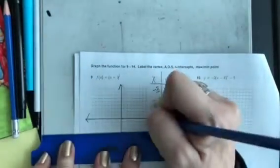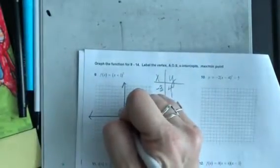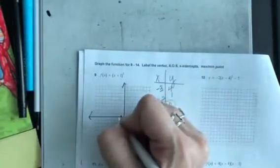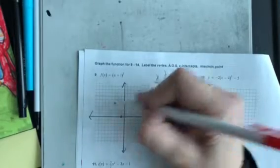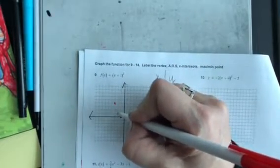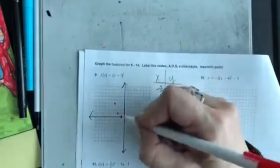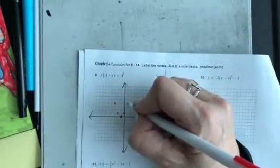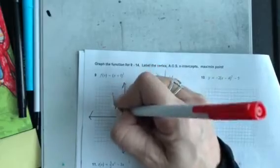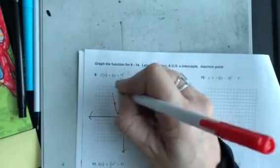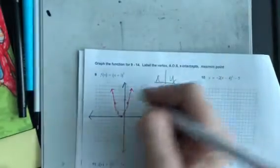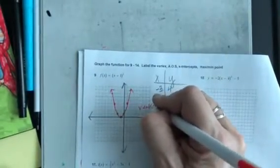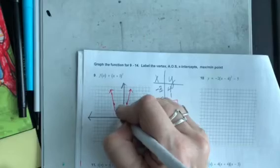So in the case of this one, I always like to start with my vertex, negative 1, 0. Negative 3 goes up to 4. Negative 2 goes up to 1. There's my vertex, 0, 1, and 1, 4. Now, it says straight up, label the vertex. So, actually, I got it right here. Vertex is negative 1, 0. It's right there.